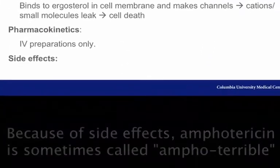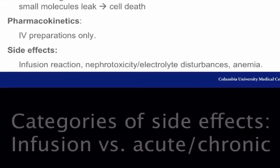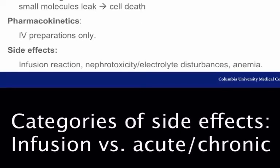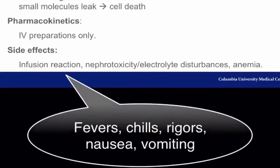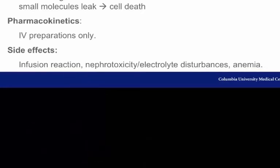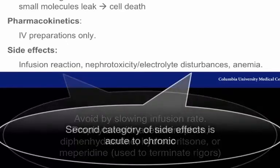The major downside of Amphotericin B remains its serious side effects. We can think of these in two categories. The first category are infusion reactions. This cytokine-mediated phenomenon is experienced by most patients in the form of fevers, chills, rigors, nausea, or vomiting. These infusion-related side effects may be lessened by slowing infusion time or with prophylactic treatment.